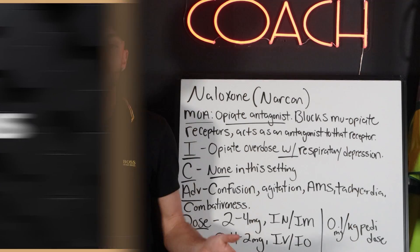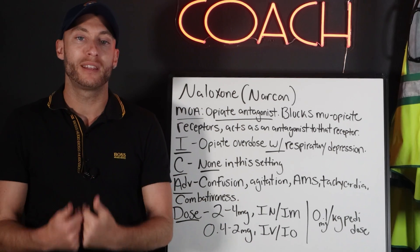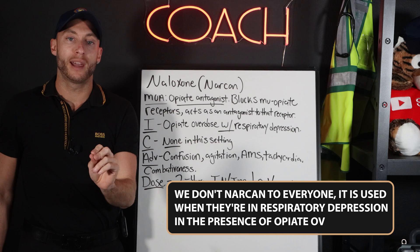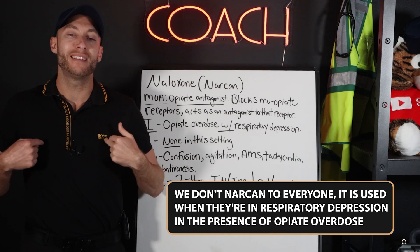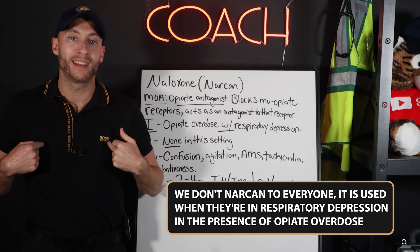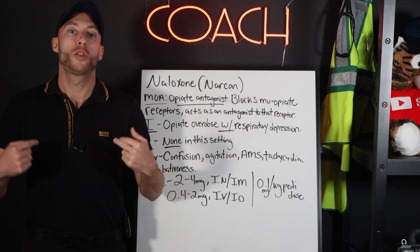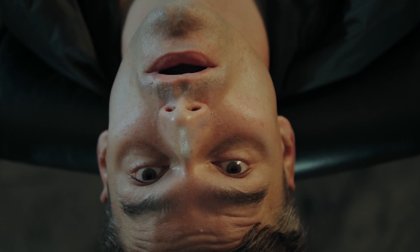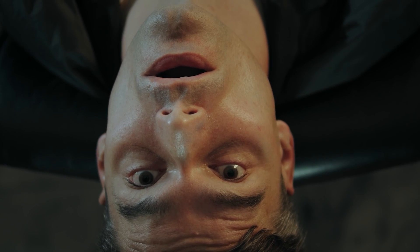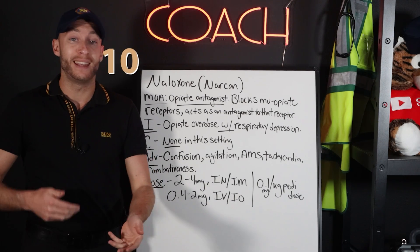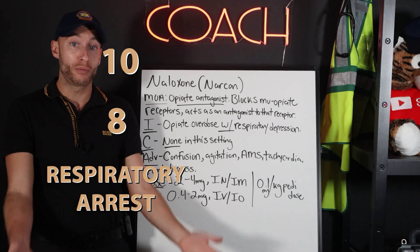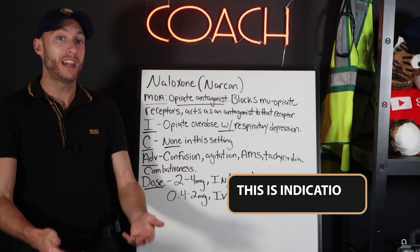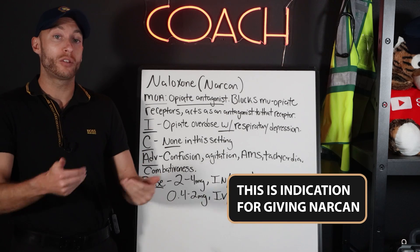Next, indications — when do we actually give it? We give Narcan when somebody takes an opiate and it is negatively affecting their respiratory drive, meaning their respiratory rate is too low. For an adult, that's under 12 — like 10, 8 — or they're in respiratory arrest and not currently breathing. This is an indication for giving Narcan.